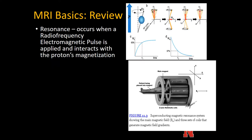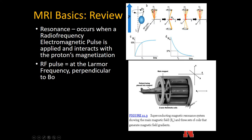Resonance occurs when a radio frequency electromagnetic pulse is applied and interacts with the protons' magnetization. Resonance is where all the protons, instead of being spread apart and spinning separately, come into resonance with each other and spin together. A radio frequency pulse is sent into the hydrogen atoms — they all spin in resonance together, then slowly fall back into the default baseline mode, spread apart. We can then measure their T1 and T2 properties — how quickly they return to being lined up or how long they stay apart.